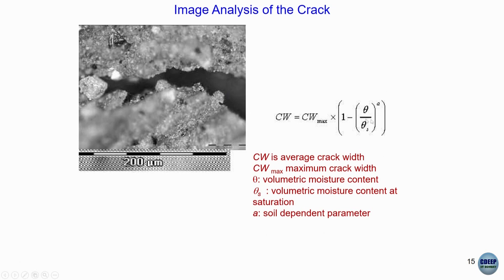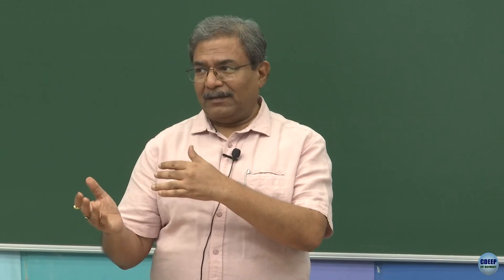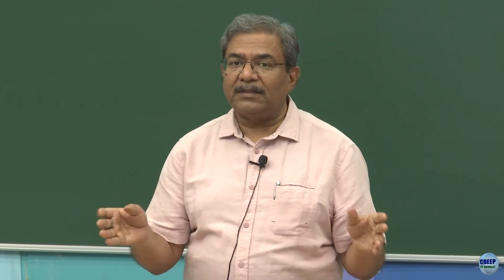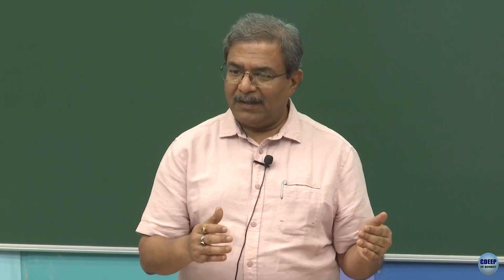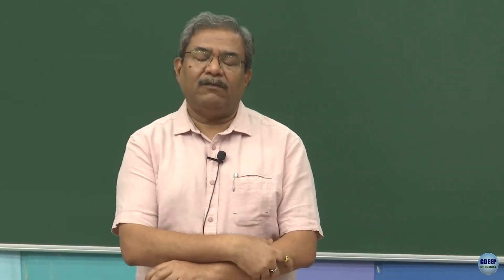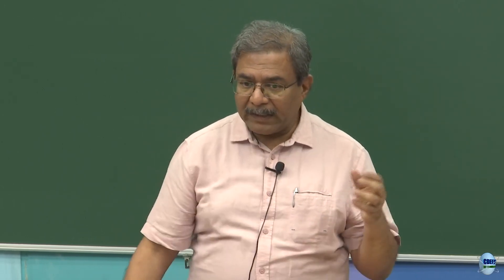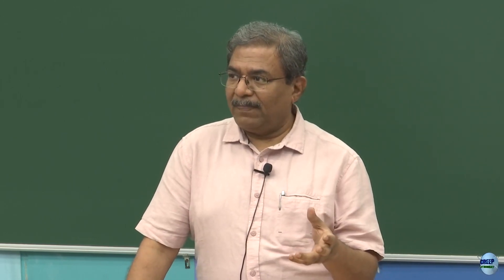We realized that crack width CW normalized as CW/CW_max is a function of the volumetric moisture content and volumetric moisture content at saturation. Truly speaking, normalized CW is a function of normalized volumetric moisture content. Gravimetric moisture content is not a very good tool to deal with the micromechanics that occur in soils and geomaterials — you have to go for volumetric moisture content because that controls the process and mechanism at the micro level. Parameter A will depend upon different types of soils and ambient conditions. These types of studies should be done for different types of soils, different mineralogies, exposed to different environmental conditions to come out with models to characterize them better.